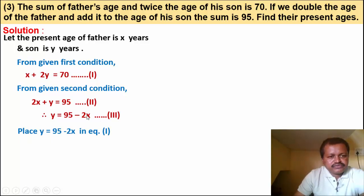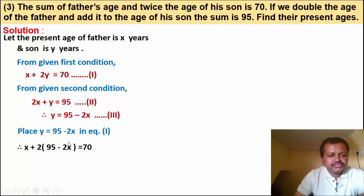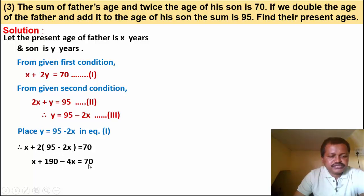Place y equal to 95 minus 2x in equation 1: x plus 2 into (95 minus 2x) equals 70. Simplifying: x plus 190 minus 4x equals 70. So x minus 4x gives minus 3x, and 190 goes to the other side as minus 190.